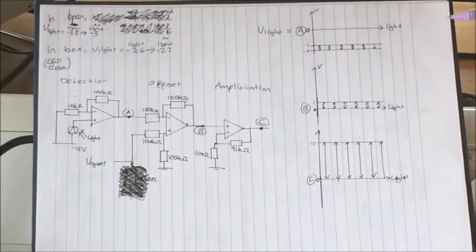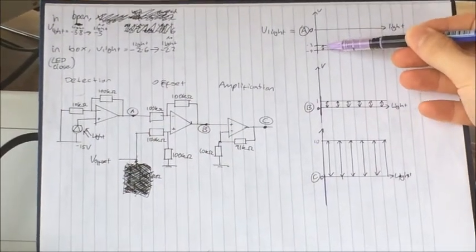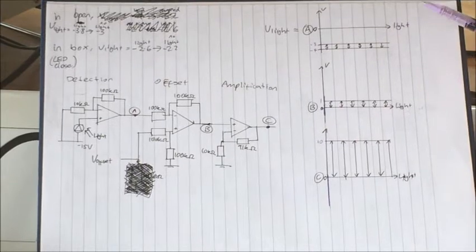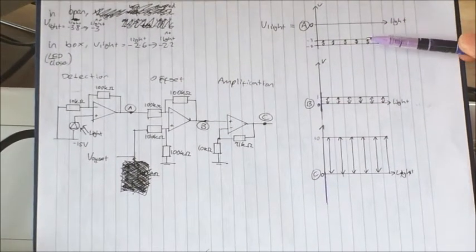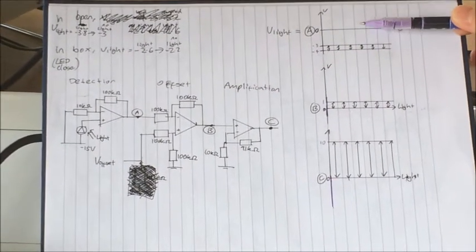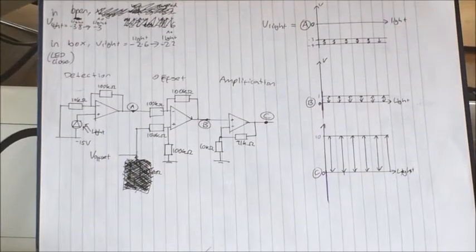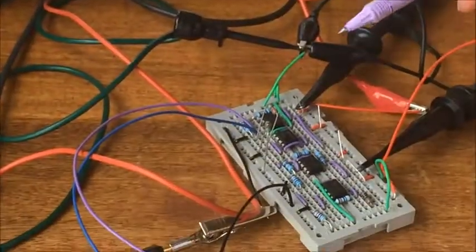After the first chip, we've got light level A, which varies between minus 3 and minus 4 depending on the light level. Even though it's larger, this still isn't that useful because it's offset from 0. This is where the two other chips come in.